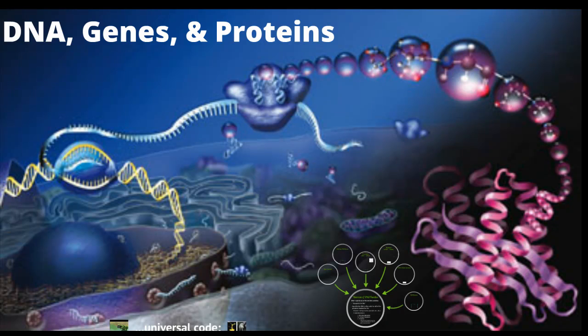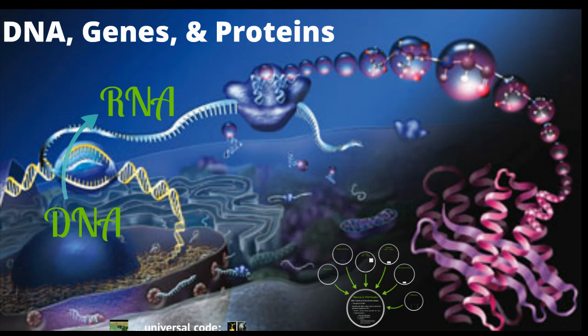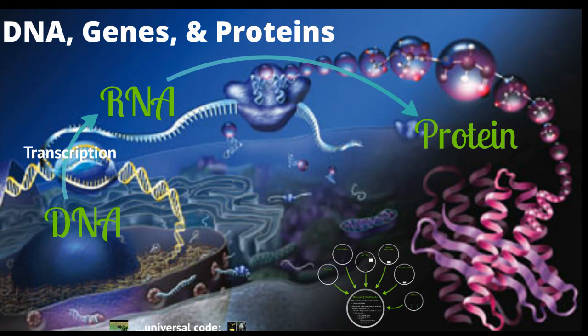So if we look at this graphic, this overall summary of the inside of a cell, we've got a nucleus here with this spaghetti-like DNA inside. Our DNA is going to be transcribed into RNA through a process called transcription. And then the RNA is going to be translated into protein through translation.